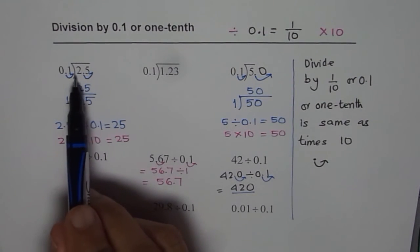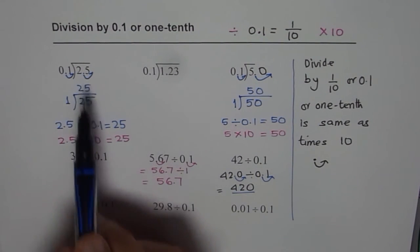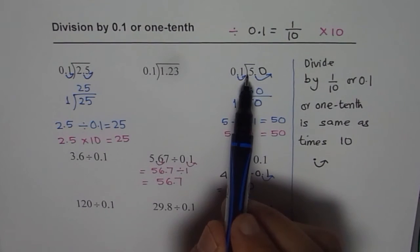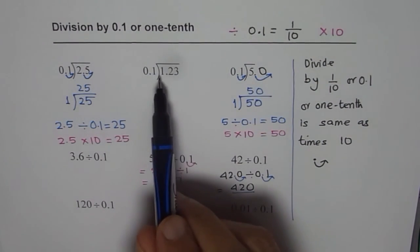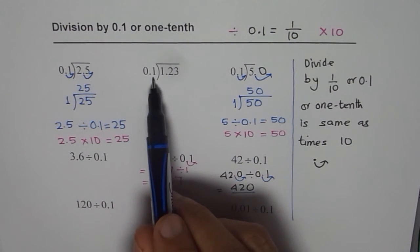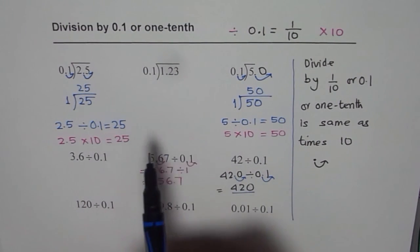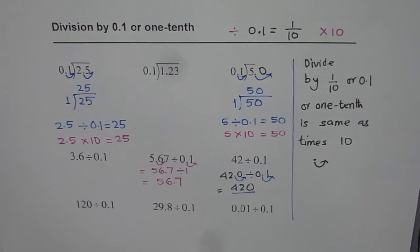So if I divide 2.5 by one-tenth, I should get 25. I do. 5 divided by one-tenth is 50. 1.23 divided by one-tenth will be 12.3. Check it out. So I hope you understood the concept. So let us do some more questions. Thank you and all the best.